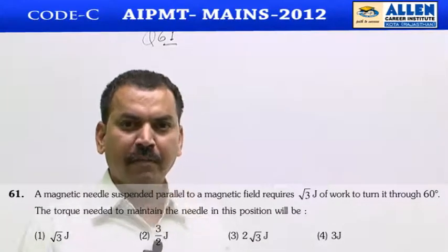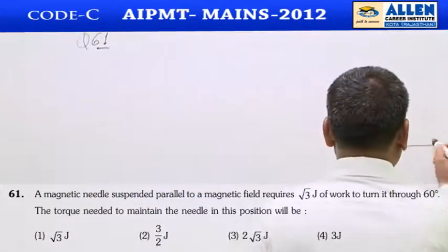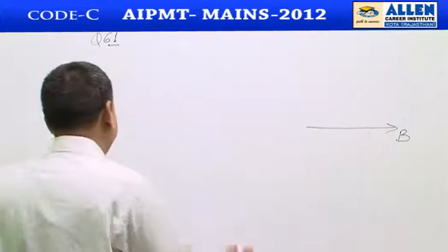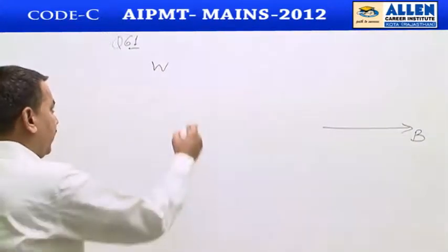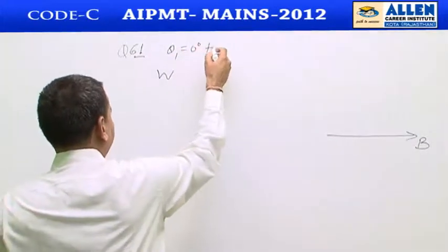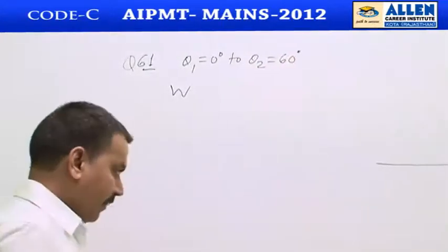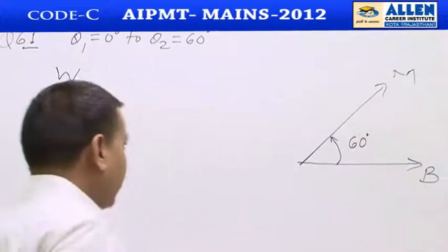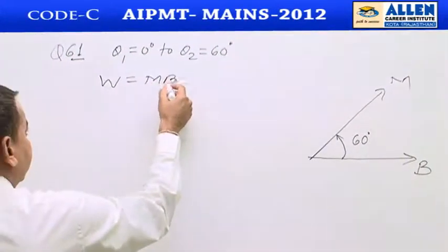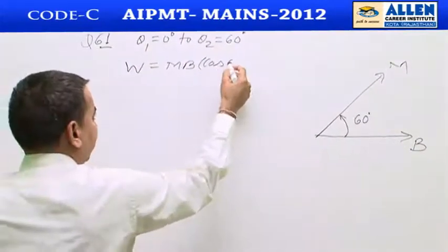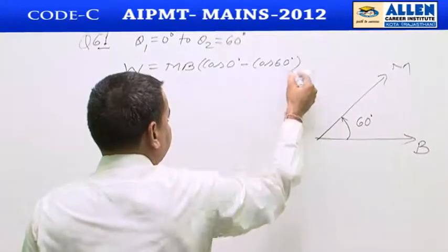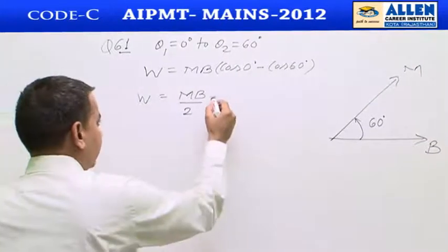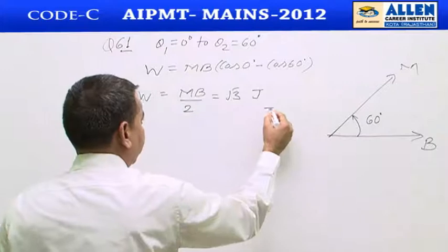Question 61 is based on magnetic dipole. A magnetic needle is freely suspended in a uniform magnetic field. The work done in rotating the magnetic needle from the direction of the magnetic field through an angle of 60 degrees is given by W = MB(1 - cos60°) = MB/2. On solving, we get MB/2 = √3 joule — this is equation number 1.